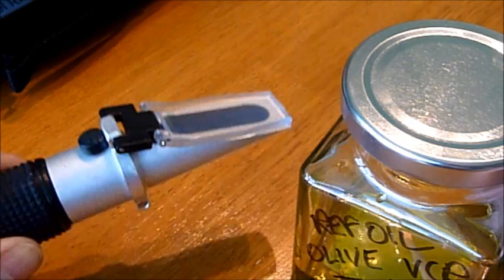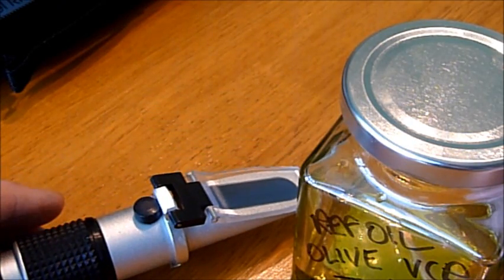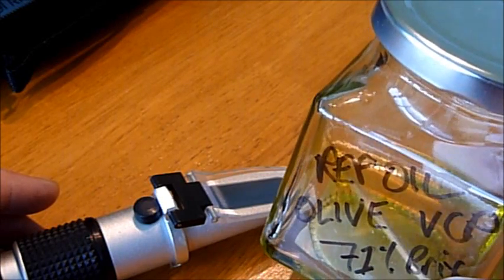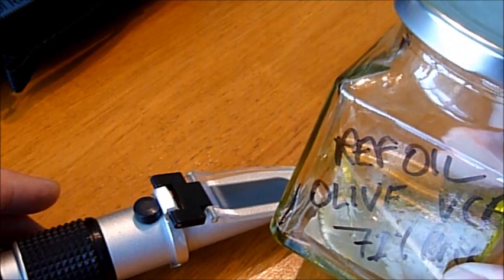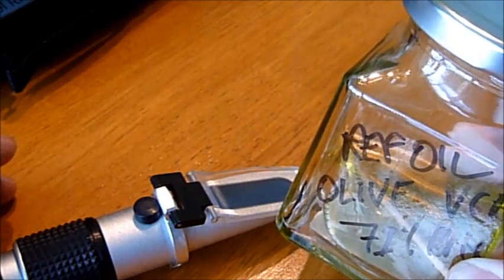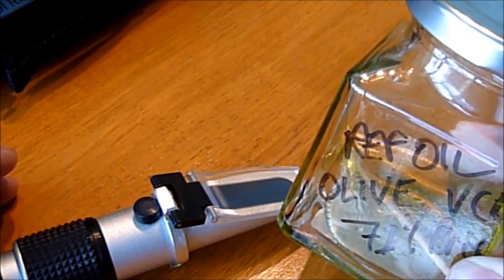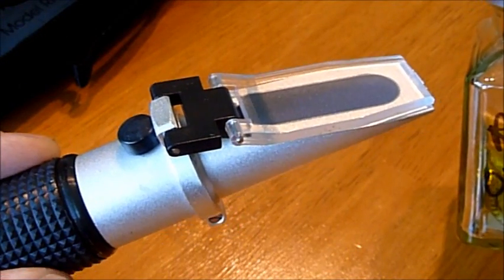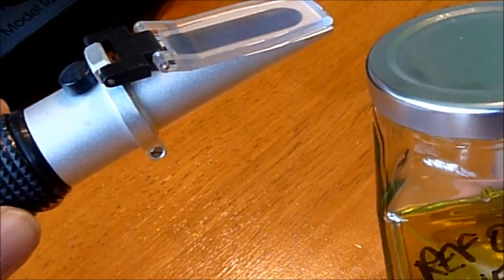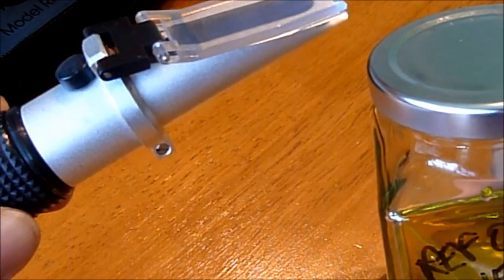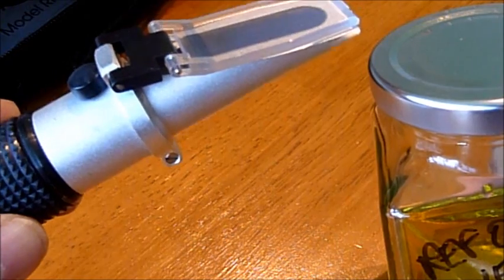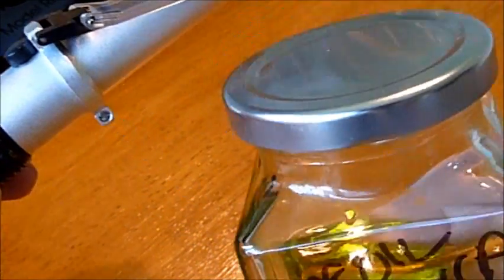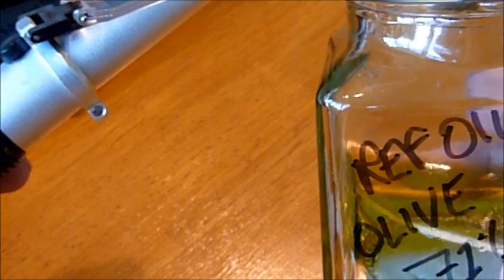When I bought this refractometer the first thing I did was to decant some olive oil that we happen to have in the kitchen. As it happens cold pressed virgin olive oil has a refractive index of somewhere between 71 and 72 depending on the exact composition of the oil. By checking the reading of the refractometer as soon as I bought it against a known reference point of the olive oil that won't change, I've now got a point at which I can calibrate back to should I need to. In other words the refractometer may change in terms of its settings but the olive oil won't change in terms of its refractive index.